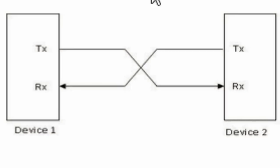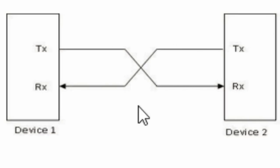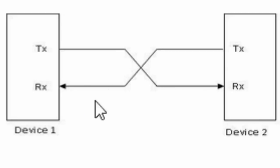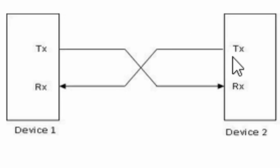If you are sending data between two microcontrollers, this is very easy — you don't need any special component between the microcontrollers. The transmitter of one microcontroller should be connected to the receiver of the other microcontroller, and the receiver of the other microcontroller should be connected to the transmitter of the first microcontroller.